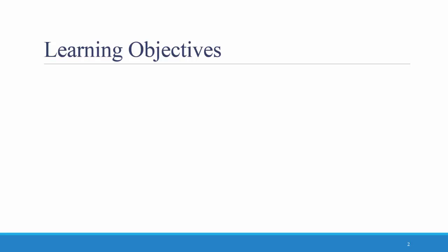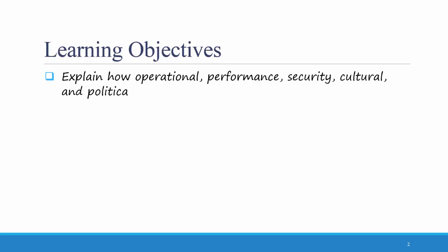The learning objective for this video is that students should be able to explain how operational, performance, security, cultural and political requirements affect the architecture design.